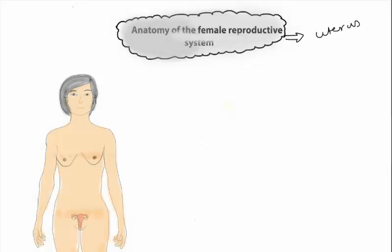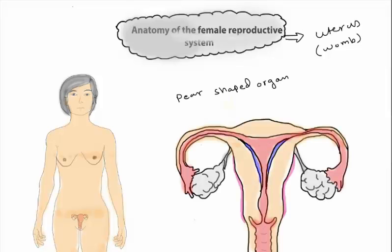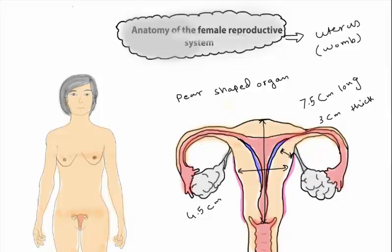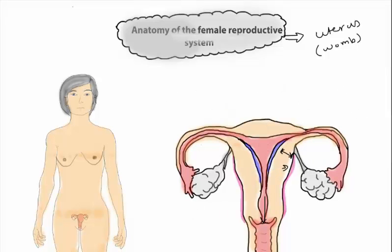The uterus, or the womb, is a pear-shaped organ which is about 7.5 centimeters long and about 4.5 centimeters broad and about 3 centimeters thick, and it weighs about 60 grams in a non-pregnant adult female. These are average numbers.